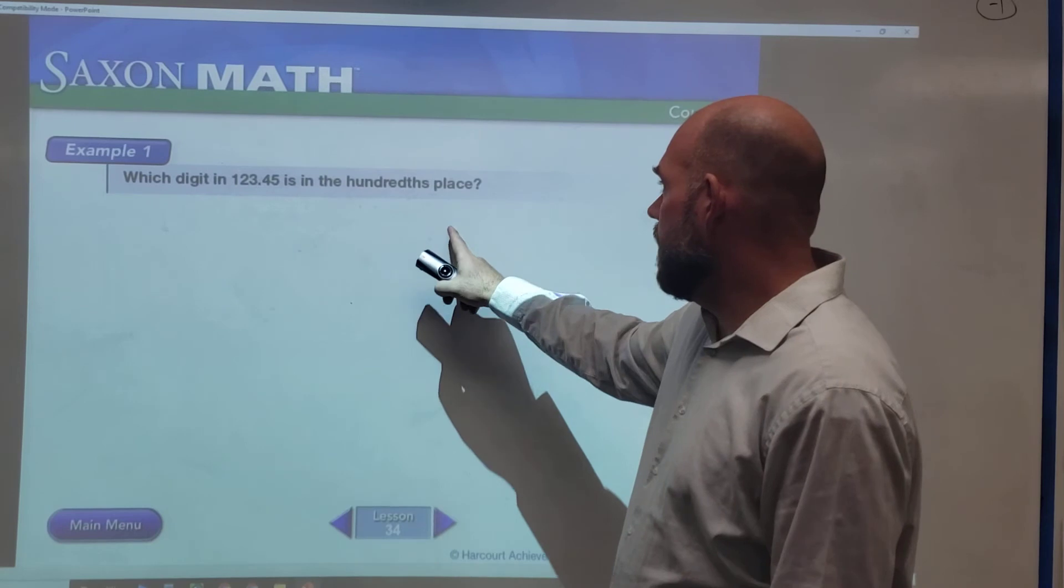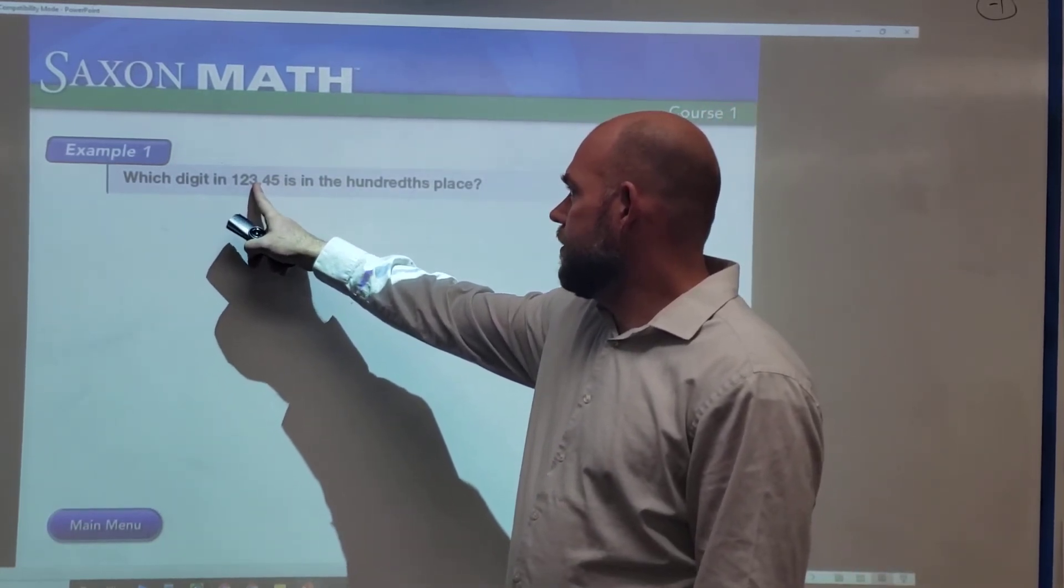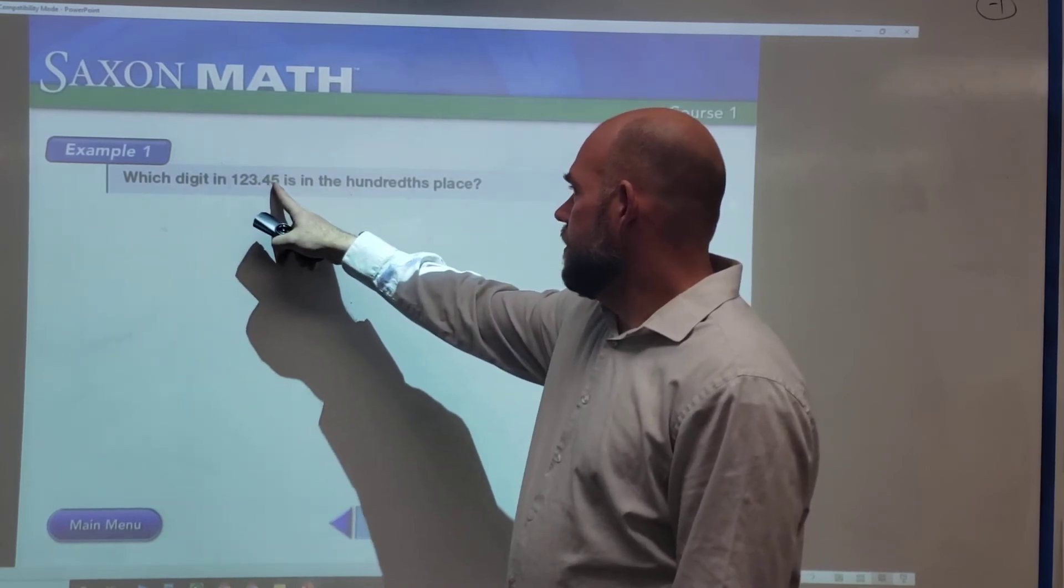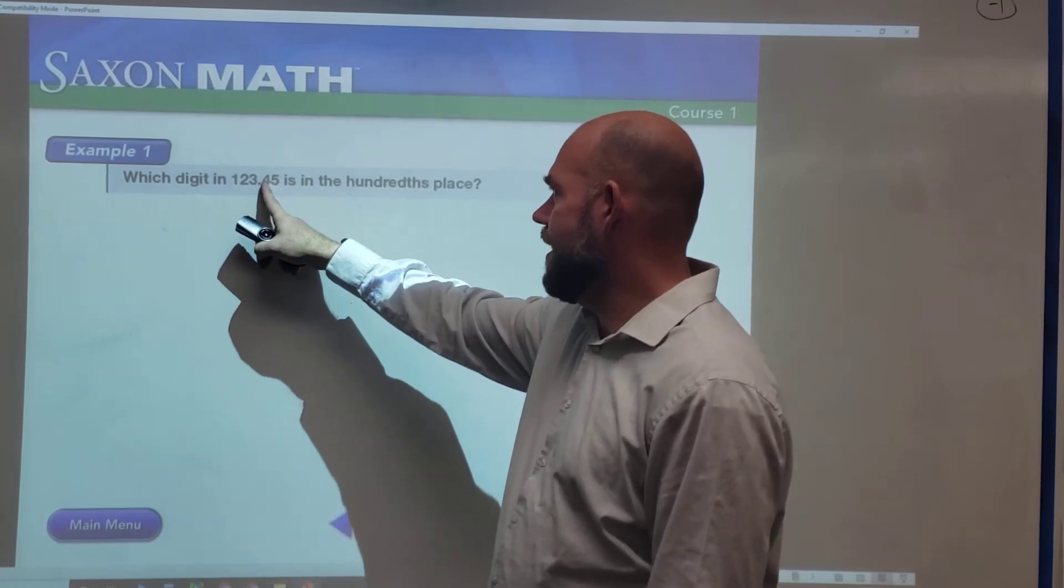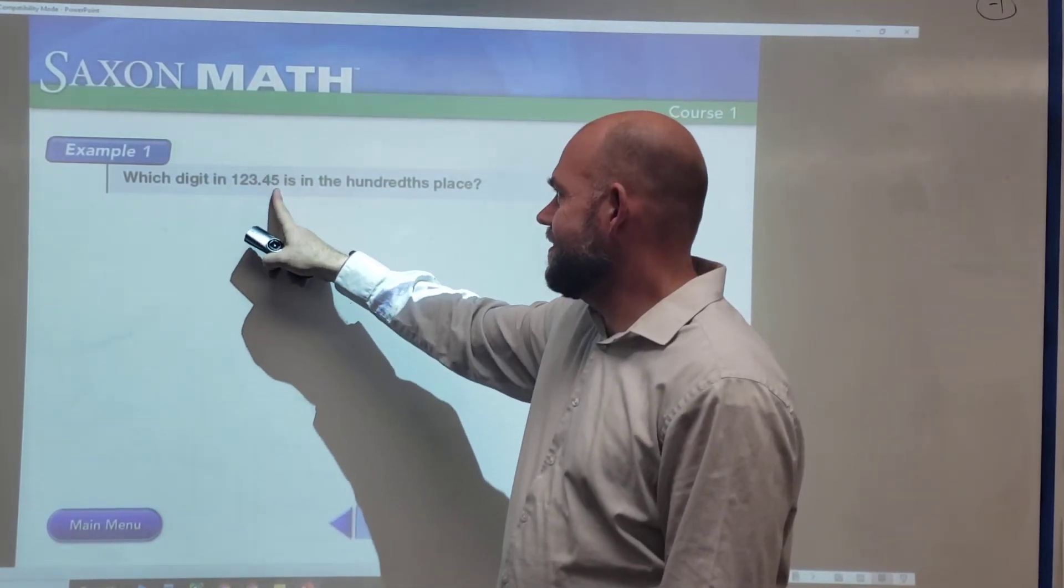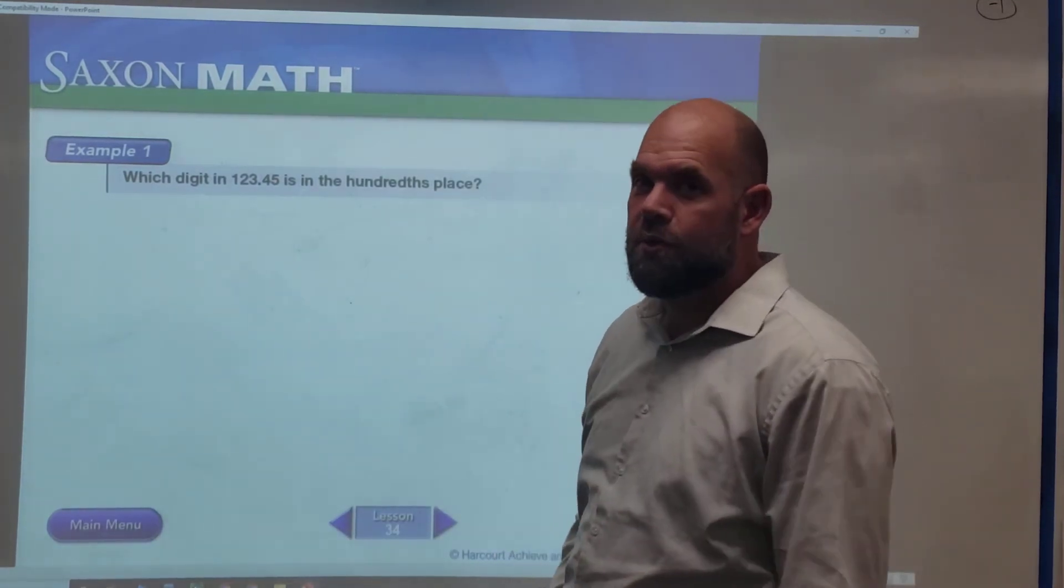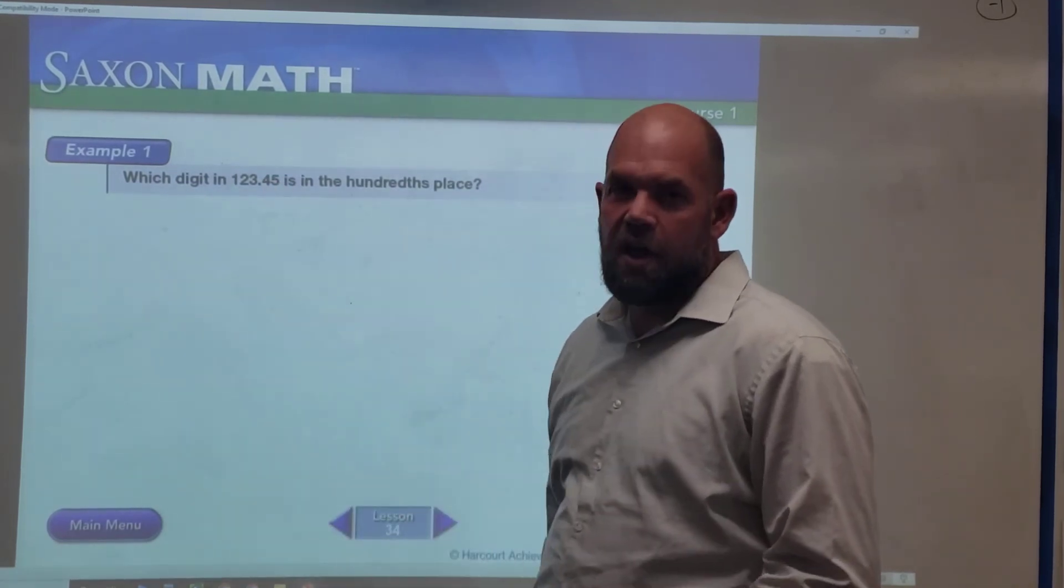Which digit here is in the hundredths place? Remember, if we go from the decimal point over to the right: tenths, hundredths—that's right, we start in tenths. So that's the tenths, this is the hundredths: the five. Because 45 would be out of a hundred. So we remember two digits is the hundredths.